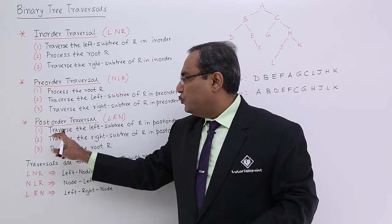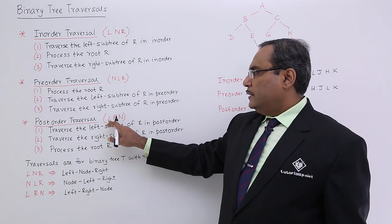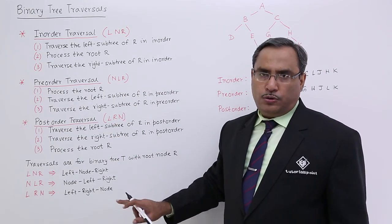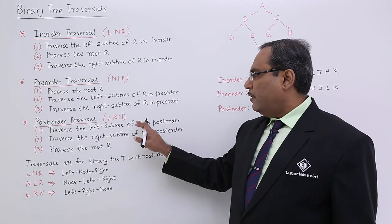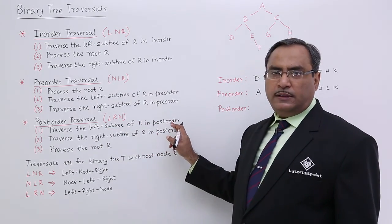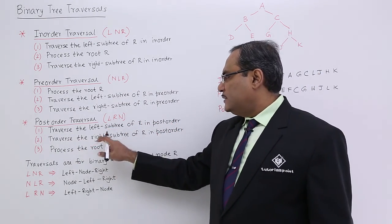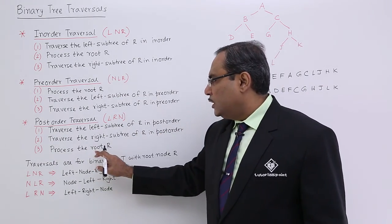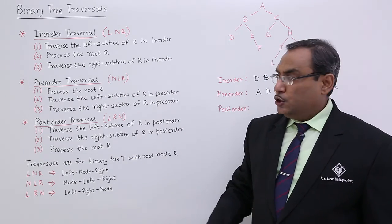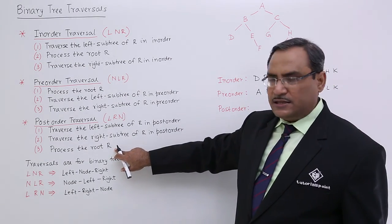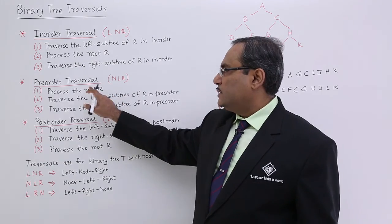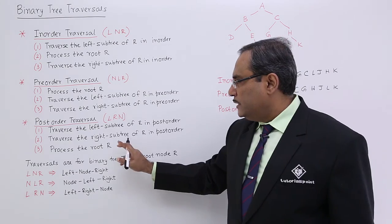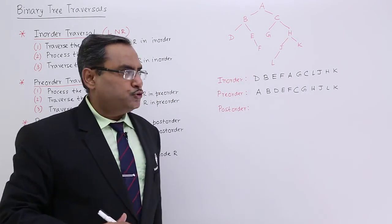The last traversal is the postorder traversal. We call it LRN — left, right, node. That means: traverse the left subtree of R in postorder traversal, traverse the right subtree of R in postorder traversal, and process the root at the last. As we process the root at the last, it is postorder. In inorder the root is in between; in preorder the root is first; in postorder the root is last.